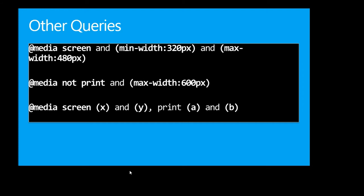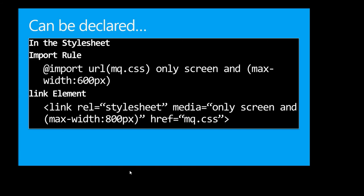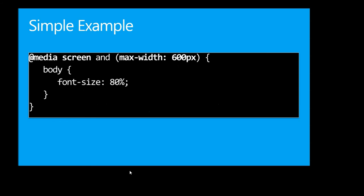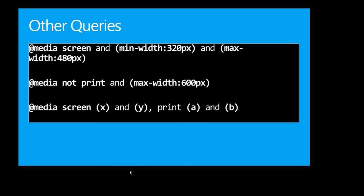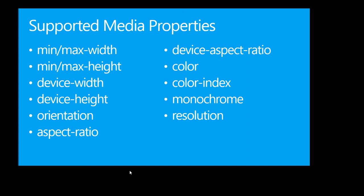Here's a simple example: if the media type is screen and the maximum width of the viewport is 600 pixels, change the font size of the body to 80%. Pretty easy. I can also say if min-width is 320 pixels and max-width is 480 pixels, do this. Or if it's not print and the maximum width is 600 pixels. I can load style sheets using @import with media conditions, or load CSS via link tags only if a max-width is met. But I can also just put the media query code directly in my CSS file.